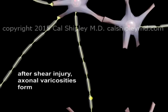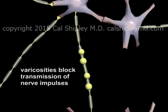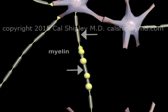The second form of secondary injury is the formation of swellings, also known as varicosities, along the length of the axon. Axonal varicosities may result in only a partial loss of nerve impulse transmission. Loss of myelin may also occur in association with the formation of axonal varicosities, eventually resulting in complete loss of nerve impulse transmission.